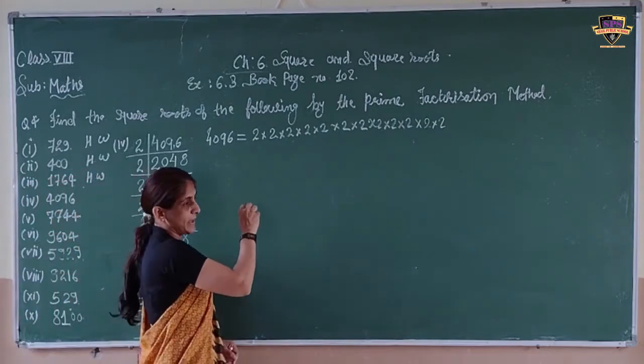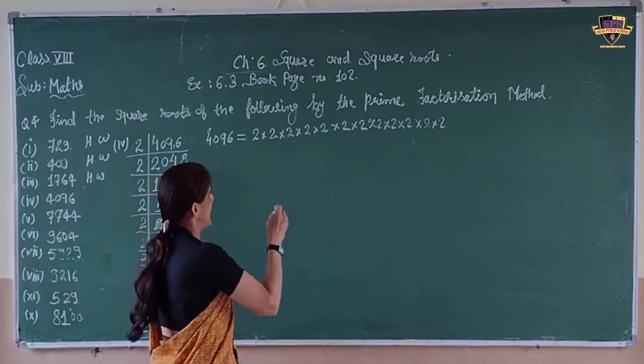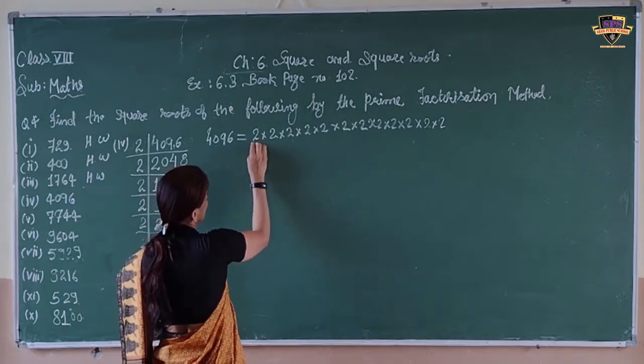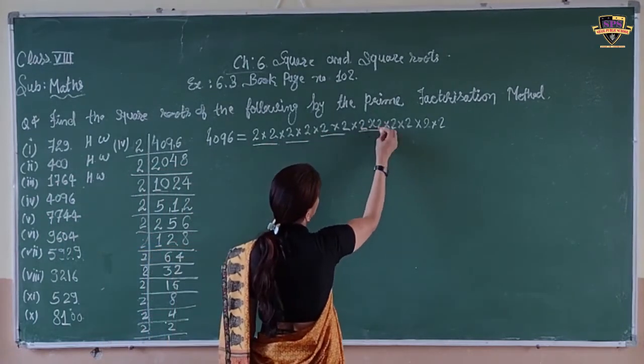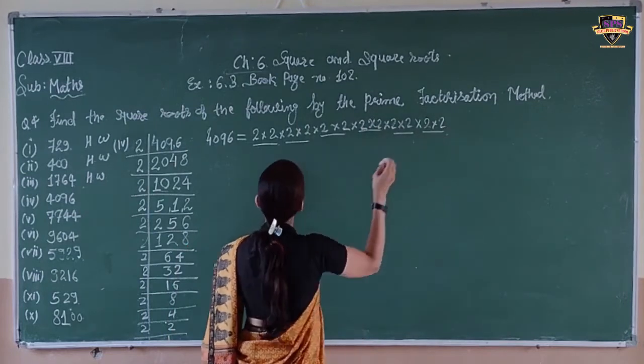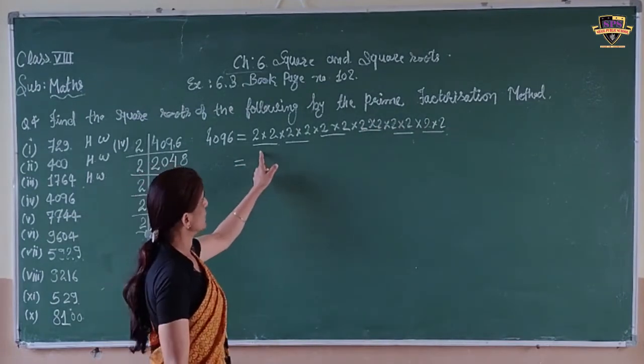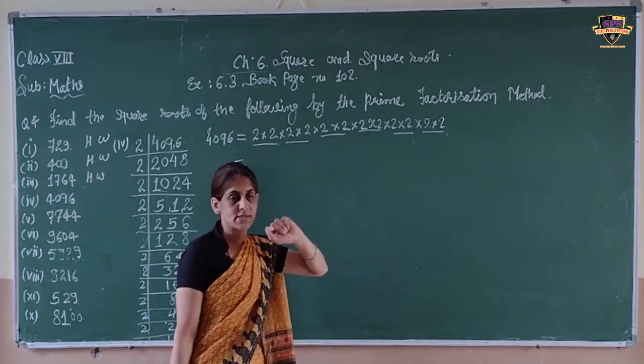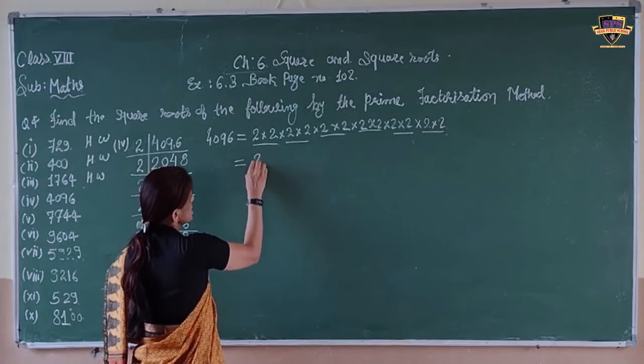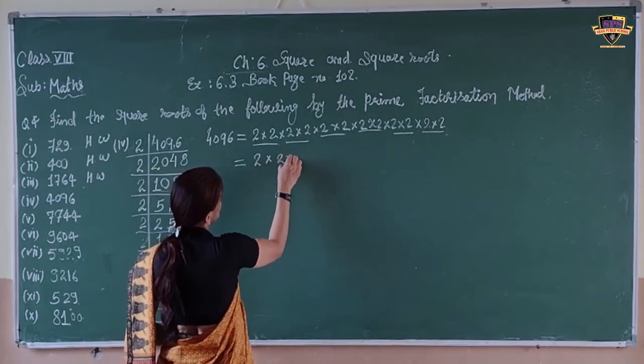Now for square roots, you make a pair with the same number. So you need to make pairs. This one, this pair, this pair, this pair. We get 6 pairs of 2.